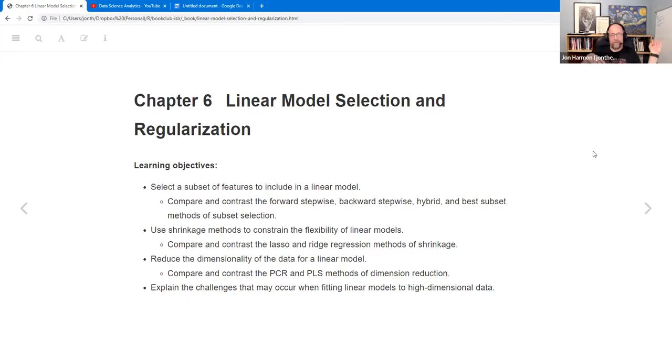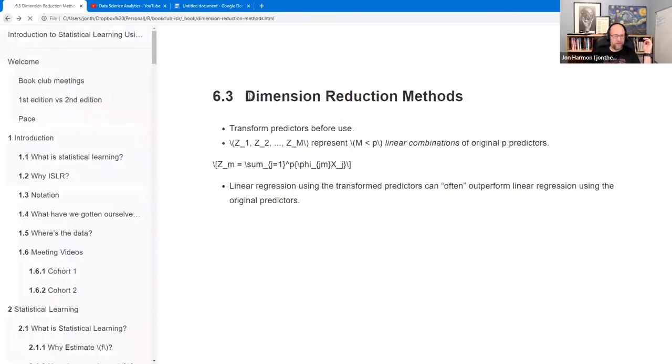Today we're going to talk about reducing the dimensionality of the data for a linear model using PCR and PLS, and we're going to talk about the similarities and differences there. And then we're going to talk about some of the challenges that can occur when fitting linear models to high-dimensional data. I am not prepared to talk about the lab, so I don't know that this will take the full hour. All right, so jumping to my sections.